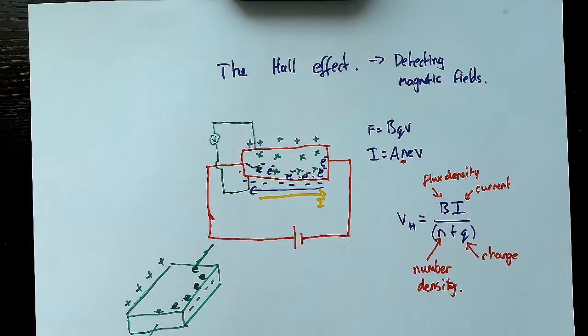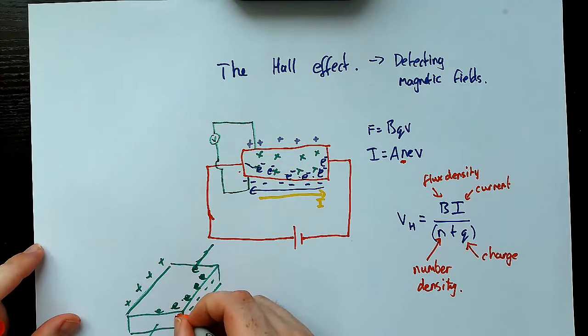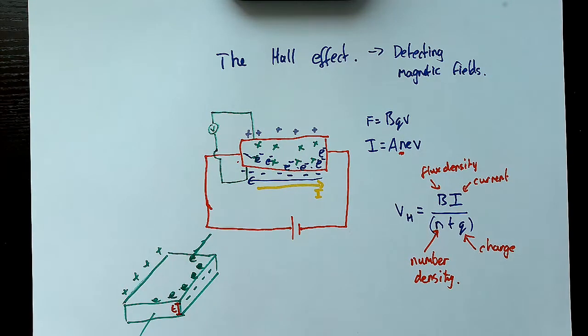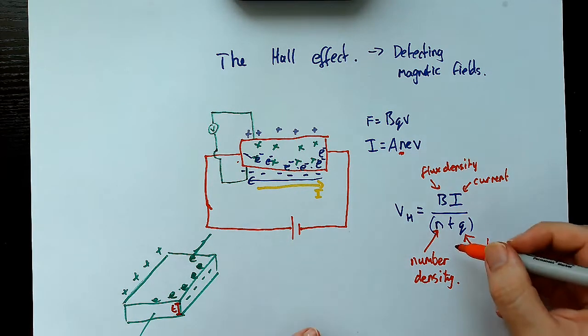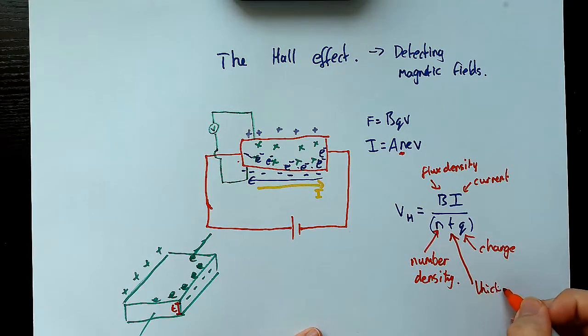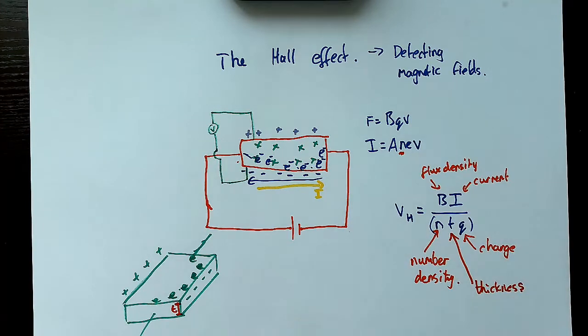So what is the value T? Well, T is the thickness of this conductor. It's this value right here, okay? It's the thickness of the conductor that is actually allowing those electrons to pass through, that's measuring the magnetic field. So the thickness is the thickness of this conductor. So the thickness.